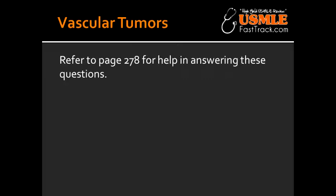What is angiosarcoma? Angiosarcoma is a rare blood vessel malignancy typically occurring in the head, neck, or breast area. Angiosarcoma is associated with patients receiving radiation therapy, especially for breast cancer or Hodgkin's lymphoma.